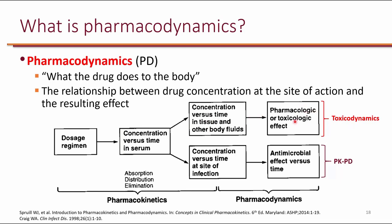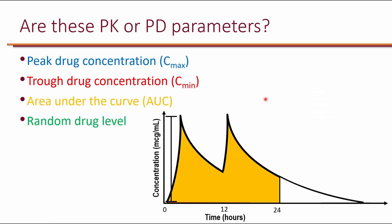Important PK parameters: on the horizontal axis is time; on the vertical axis is drug concentration. At the end of infusion, you get the maximum concentration, referred to as peak or C-max. Once infusion stops, the body starts to clear the drug, and concentration drops until the next dose—that minimum concentration is the trough, also referred to as C-min. There is also the area under the curve (AUC), representing all drug exposure over a 24-hour period, regardless of dosing frequency.